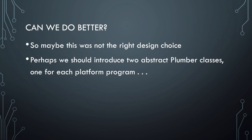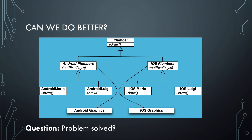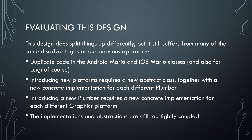Okay, maybe we need to redesign this. Another option is to introduce two abstract plumber classes, one for each graphics platform. So then you get something that looks like this. Did we solve the problem now? You probably still respond with meh. We split up things differently, but the problems are still the same, only shifted. There's duplicate code in Android and iOS Mario, as well as Luigi. If you introduce new graphics platforms or new plumbers, you still need to write many extra classes. This is still too tightly coupled.